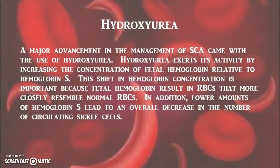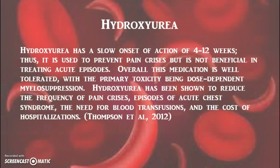Hydroxyurea is a major advancement in the management of sickle cell anemia. It increases the concentration of fetal hemoglobin, which more closely resembles normal RBCs relative to hemoglobin S. Because hydroxyurea has a slow onset, it can be used to prevent the chances of a pain crisis but is not beneficial in treating acute episodes.